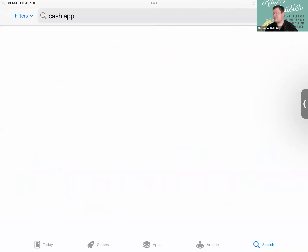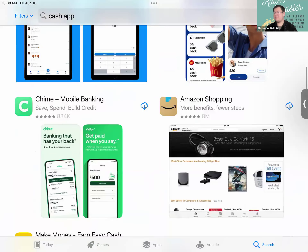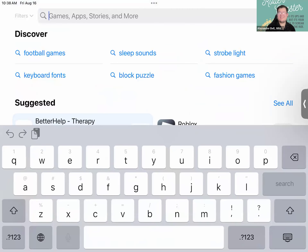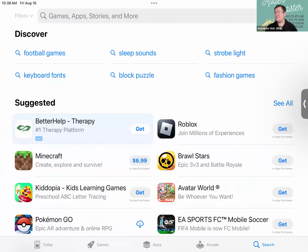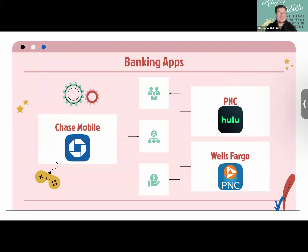There are also Cash App, Venmo, PayPal, and mobile banks like Chime as alternatives. About 7–8 hands raised for banking apps. It's so much easier to just click and look at your information quickly rather than physically going to the bank — banking apps let you adjust or manage your account right from your device.